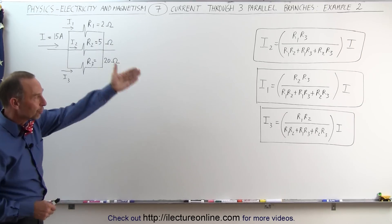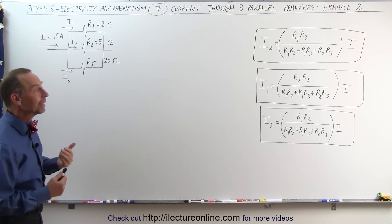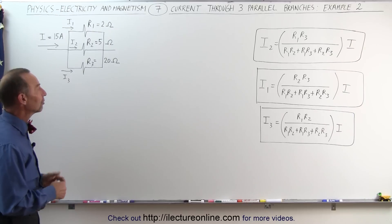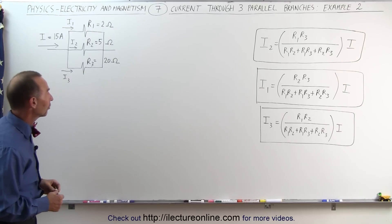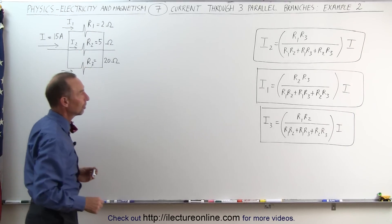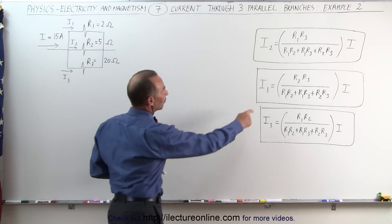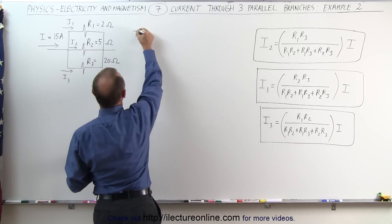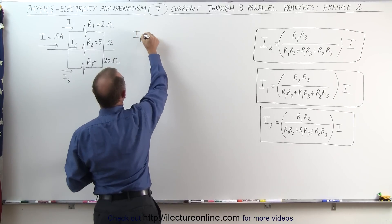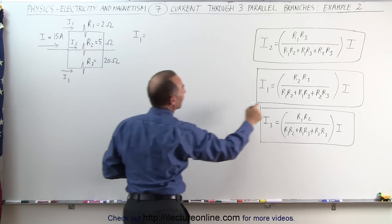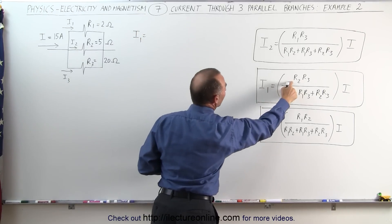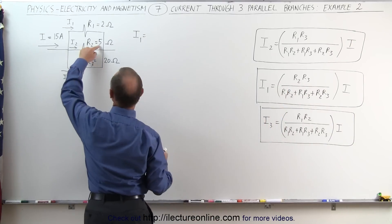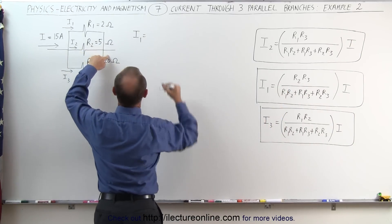If you have the three equations ready to go, it shouldn't be that difficult to find the current in each of the three branches. Let's start with the top branch, and so we'll grab this equation right here. We can then say that I1 is equal to, in the numerator, the product of the resistances in the other two branches — that would be 5 times 20.